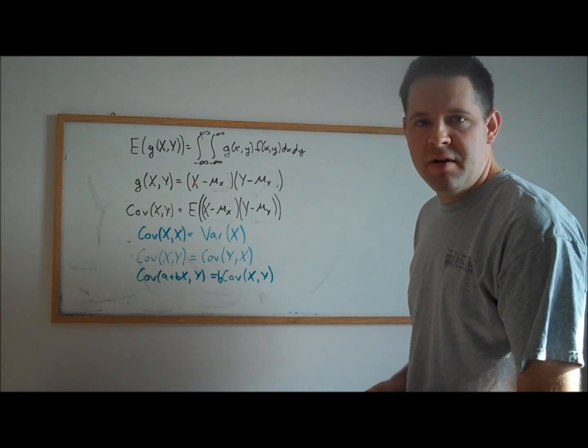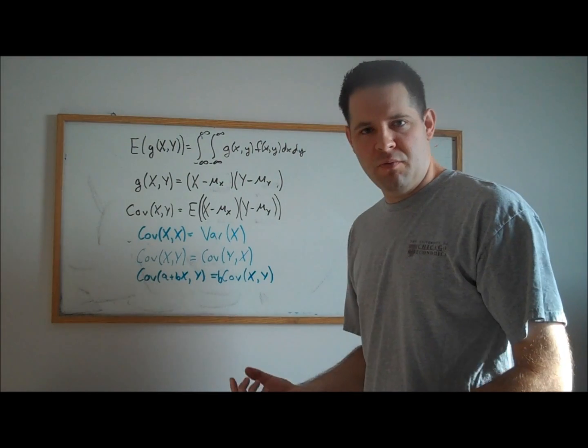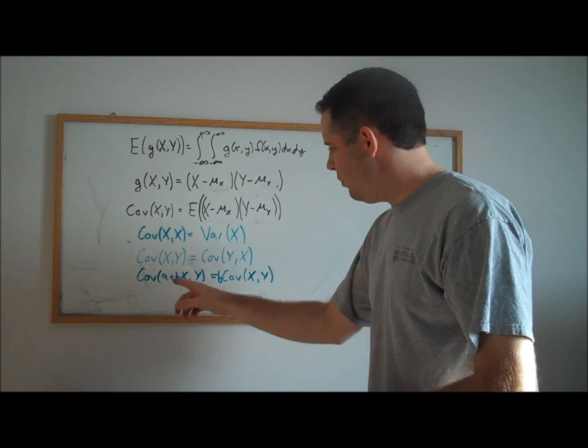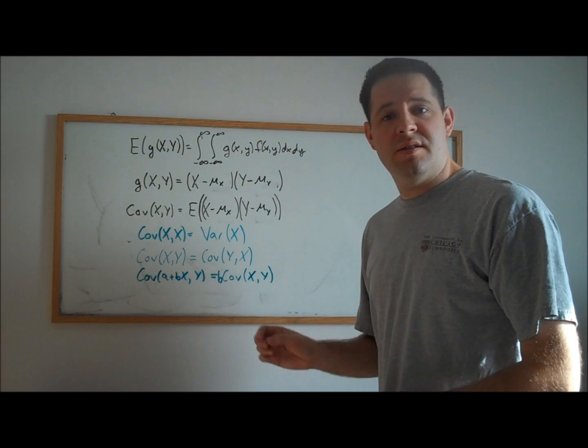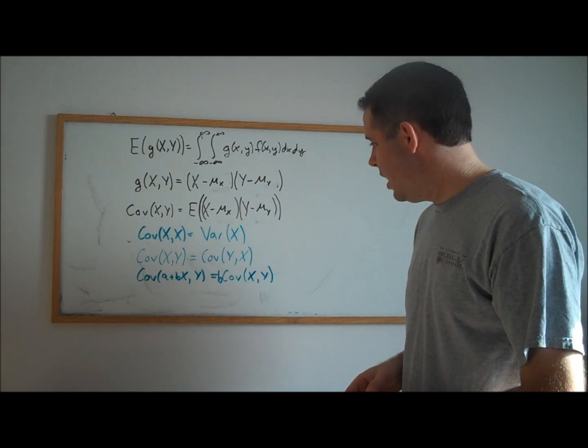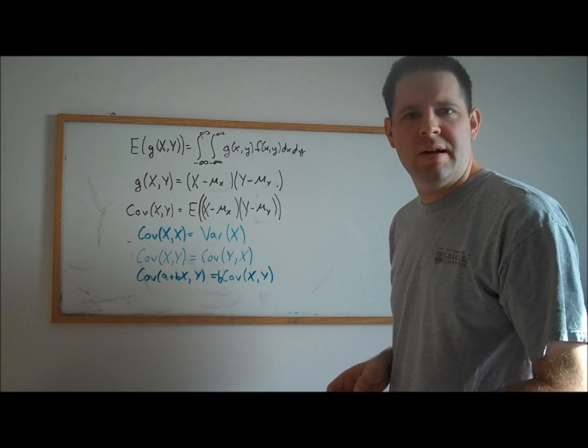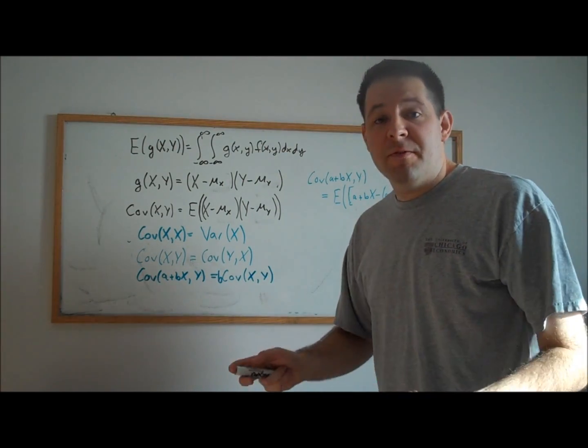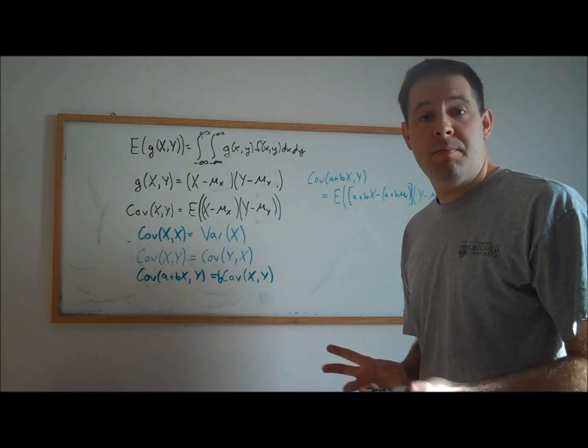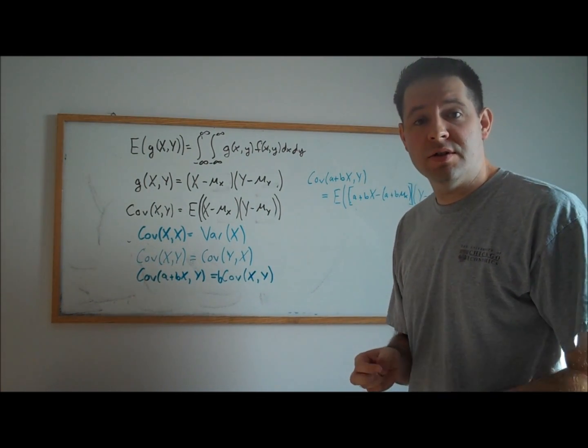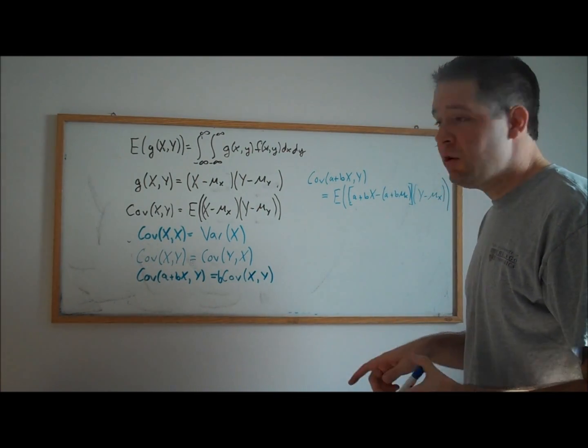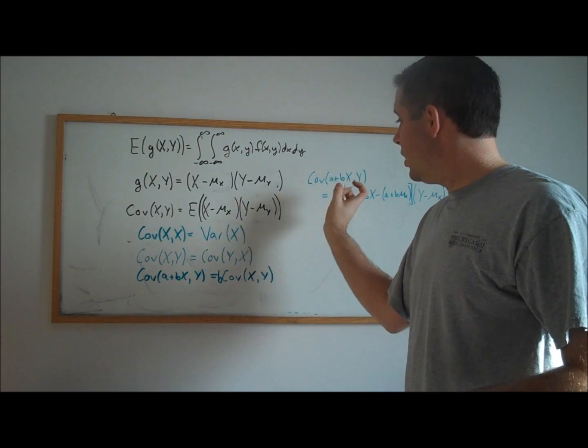The next nice property is if we have a linear function of one of these random variables and we covariate that with the other random variable, all that matters is the slope in that linear function. Let's verify this. First, we know some things about the expectation of a linear function, that those are also linearly related.